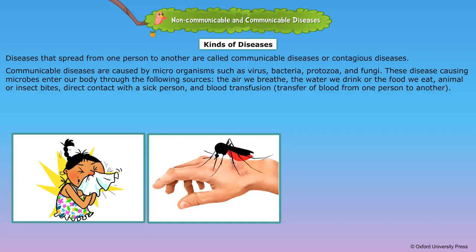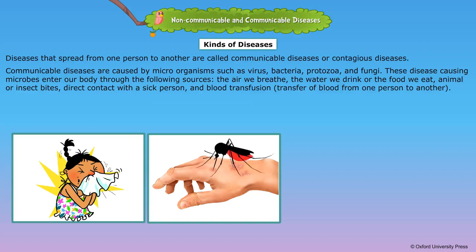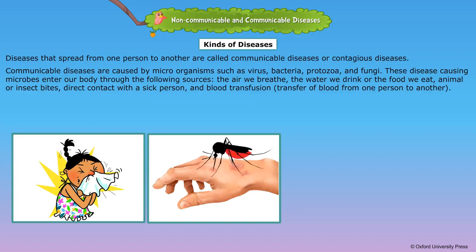These disease-causing microbes enter our body through the following sources: the air we breathe, the water we drink or the food we eat, animal or insect bites, direct contact with a sick person, and blood transfusion — the transfer of blood from one person to another.